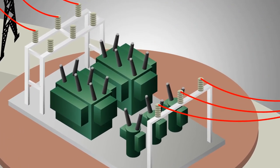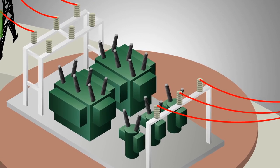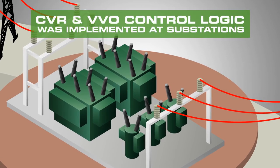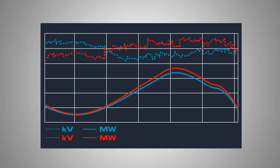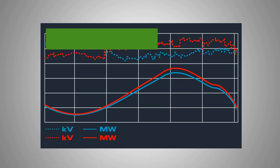For the summer 2011 pilot deployment, the CVR and VVO control logic was implemented at Myrtle-Date and Madison-Kenneth substations. As shown in the chart, the average results over the 8-week test period varied from 1% to 2.5%. The average peak demand was reduced 1.7% for a 2% voltage reduction.